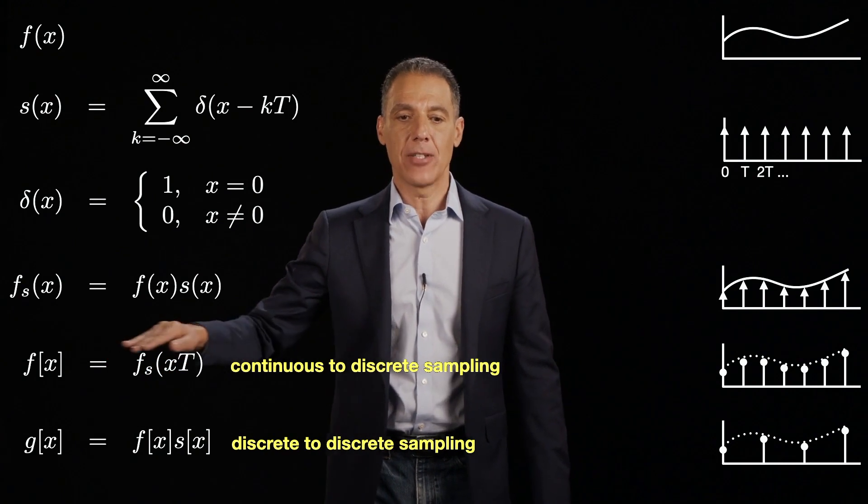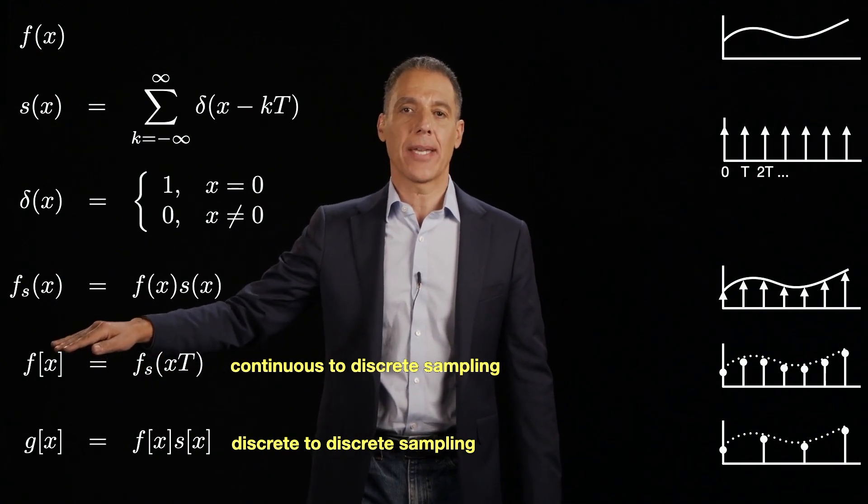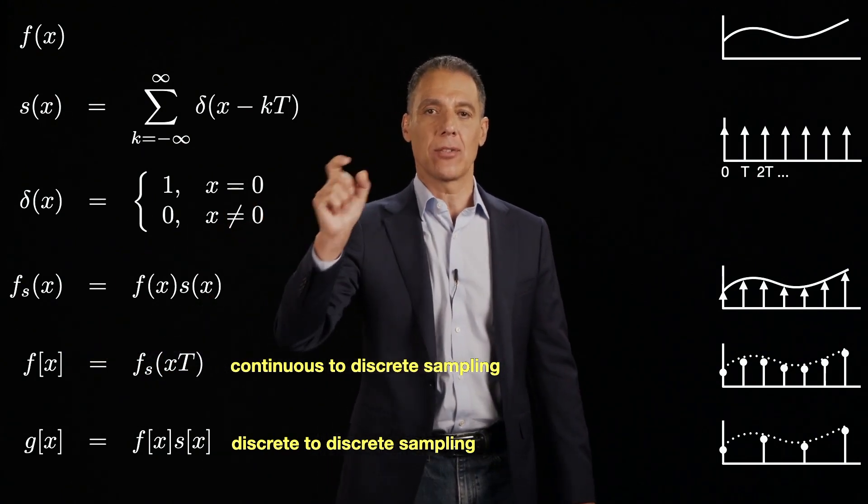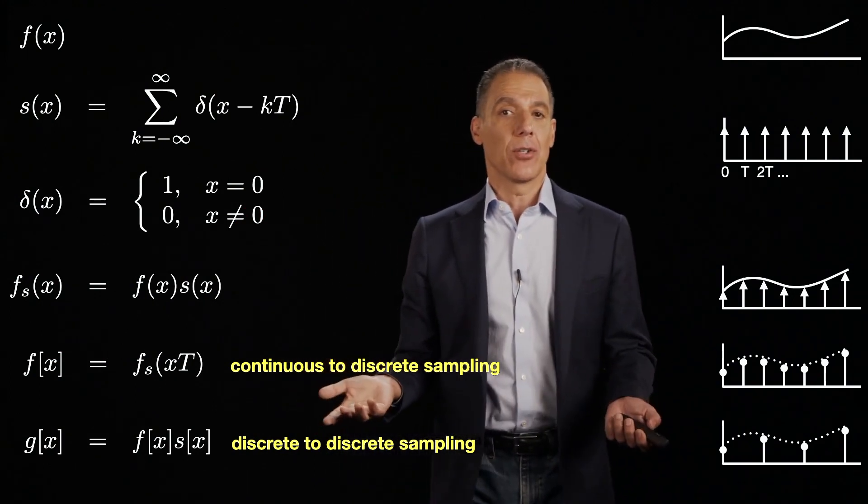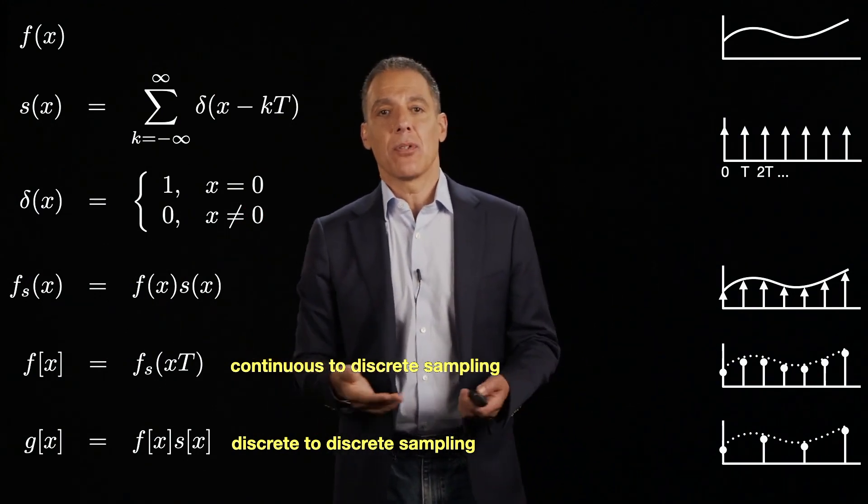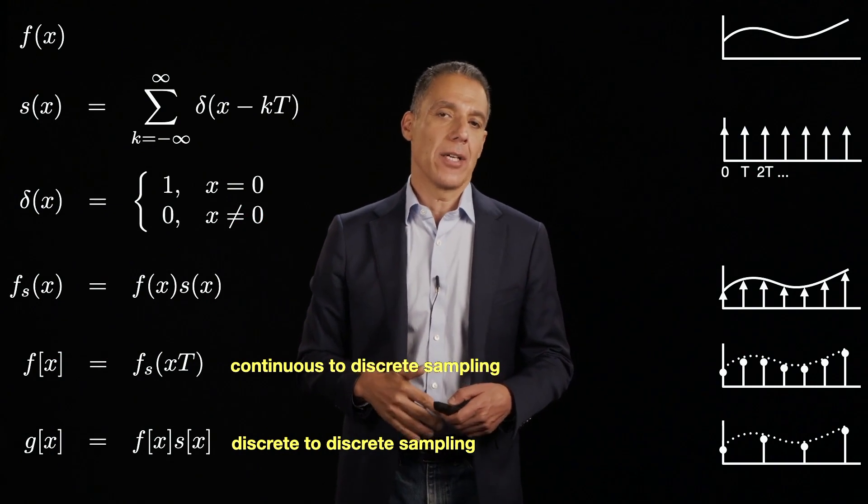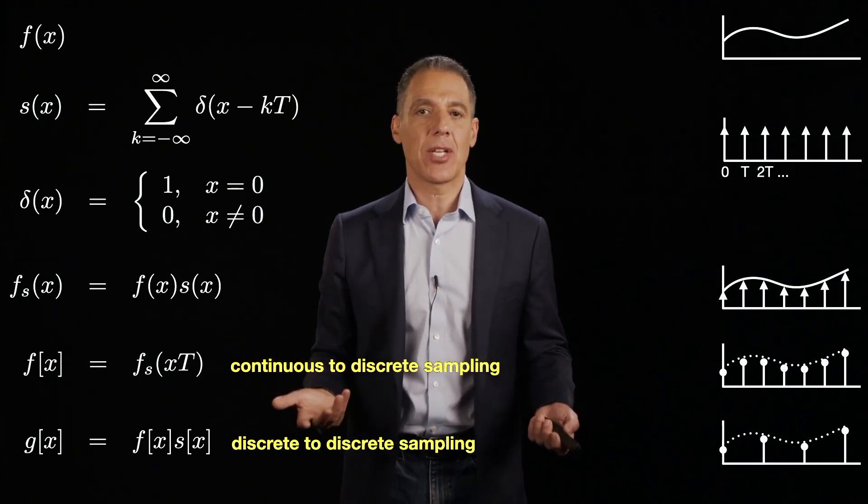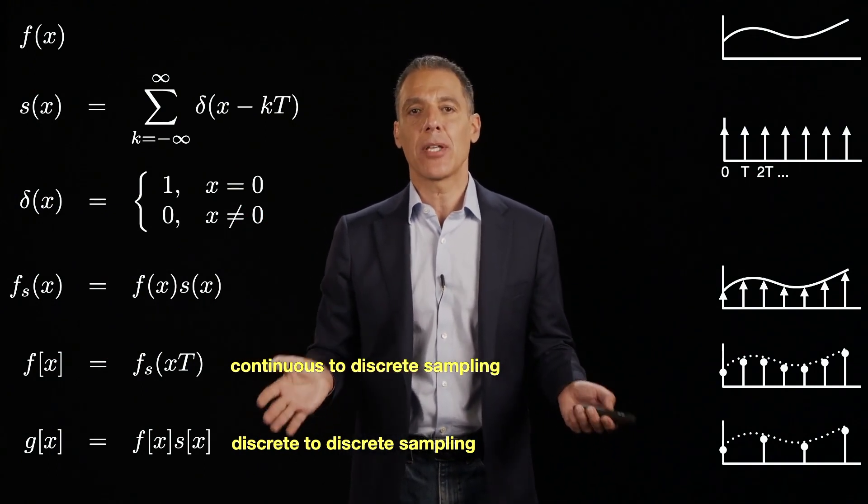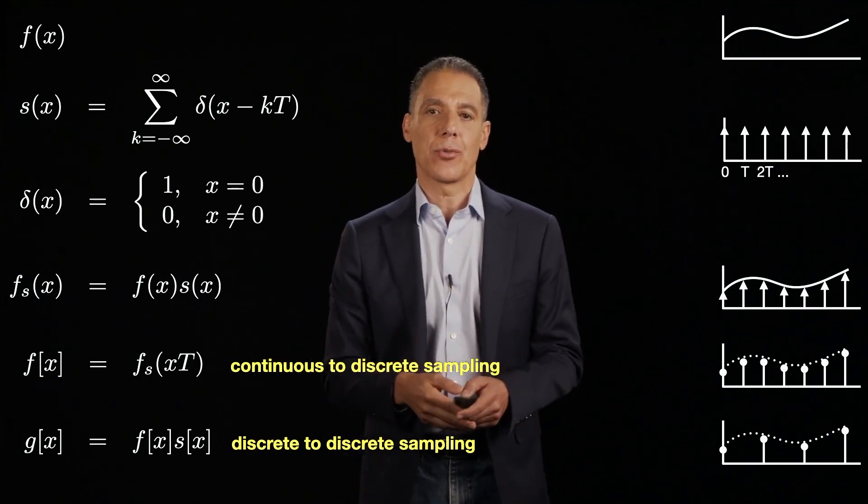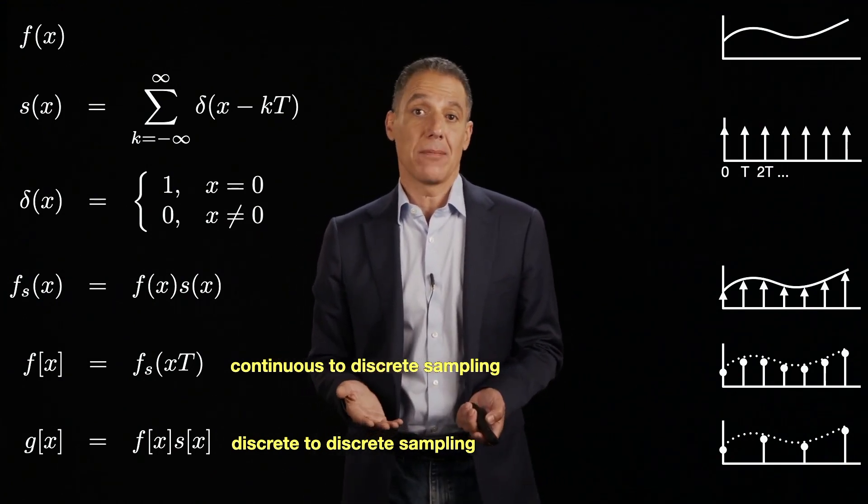Now what I have is my f[x] discretely sampled signal or image. Now, as I said earlier, sometimes I want to downsample. Maybe I don't want to analyze a 10 megapixel image because computation is too demanding. So maybe I want to go down by half resolution or quarter resolution. How do I do that? I sample.